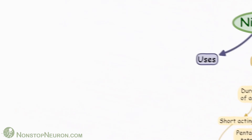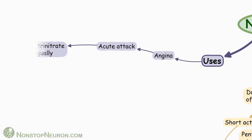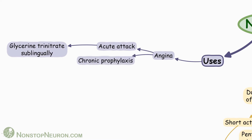Now let's move to uses of nitrates. They are used in angina. For an acute attack of angina, glyceryl trinitrate is given by the sublingual route. For chronic prophylaxis, long-acting nitrates are given orally.